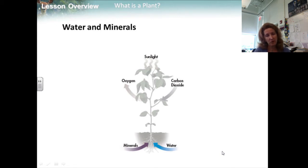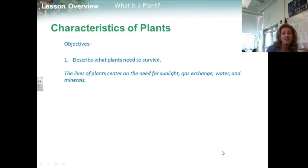Land plants have evolved structures that limit water loss and speed the uptake of water from the ground. Minerals are nutrients in the soil that are needed for plant growth, and many plants have specialized tissues that carry water and nutrients upward from the soil and distribute the products of photosynthesis throughout the body. So what do plants need to survive? You should know this: sunlight, gas exchange, water, and minerals.